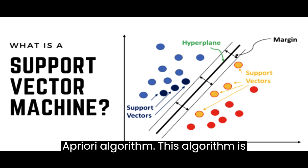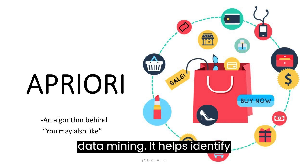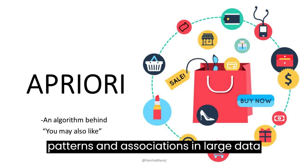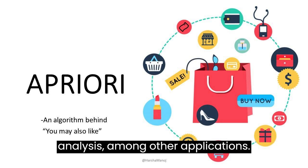A priori algorithm. This algorithm is essential for association rule mining in data mining. It helps identify patterns and associations in large datasets, used in retail for market basket analysis, among other applications.